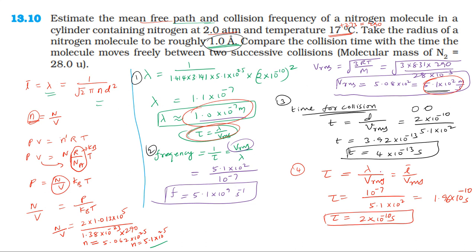Now comparing the relaxation time to the time for collision: tau divided by t equals 2 into 10 power minus 10 divided by 4 into 10 power minus 13, which gives approximately 490, or roughly 500. So the relaxation time equals 500 times the time of collision.